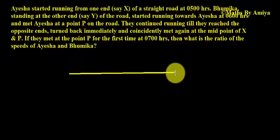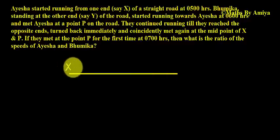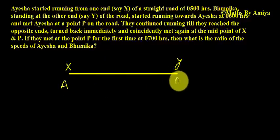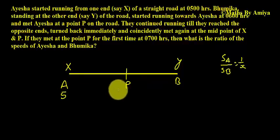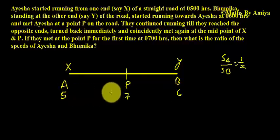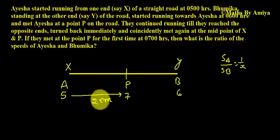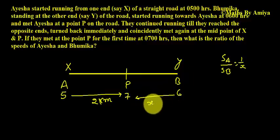Now again make a diagram. This is the path. Say this point is X and this point is Y. From here Aisha starts, here Bhumika starts. They meet at P. The speed ratio of Aisha and Bhumika, again assume, is 1 and X. Aisha starts at 5, Bhumika at 6, and they meet at 7 o'clock. So Aisha traverses for 2 hours at speed 1 — the distance is 2 km. Bhumika traverses only 1 hour at speed X, covering X km.